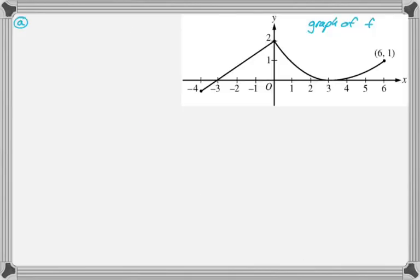Let's see what it looks like. A continuous function f is defined on the closed interval negative 4 to 6. The graph of f consists of a line segment and a curve that is tangent to the x-axis at x equals 3, as shown in the figure. On the interval from 0 to 6, the function f is twice differentiable, and f double prime is greater than 0.